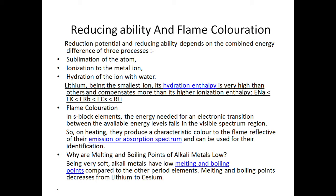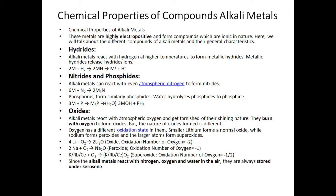The chemical properties of compounds of alkali metals change because of their being very highly electropositive elements, and they form compounds which are of ionic nature. We will now discuss the different compounds of alkali metals and their general characteristics.